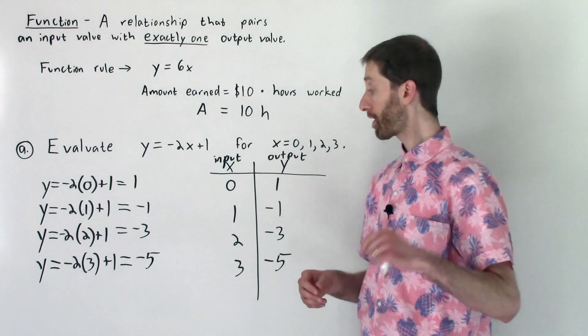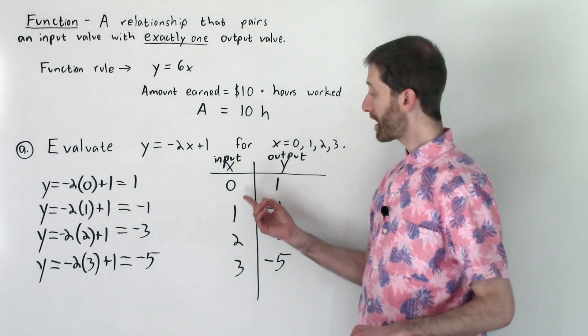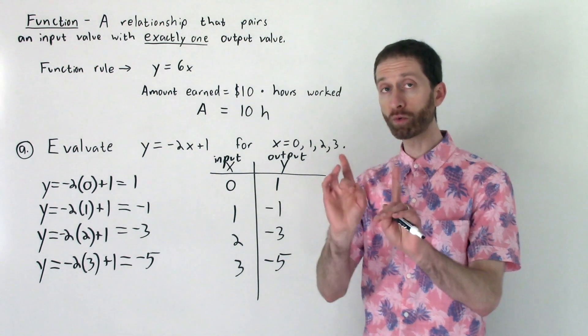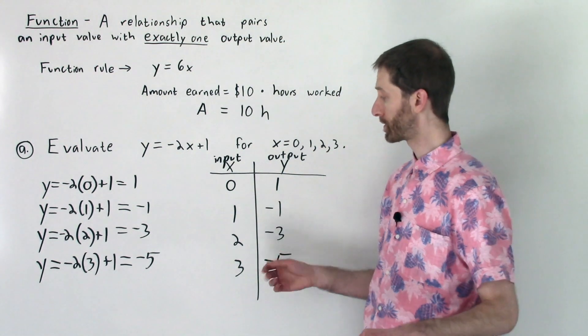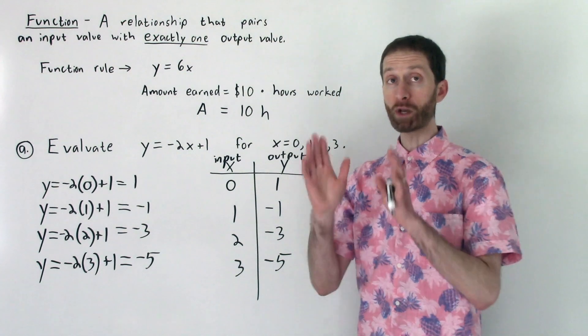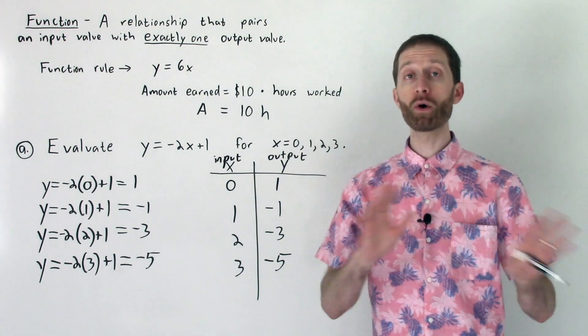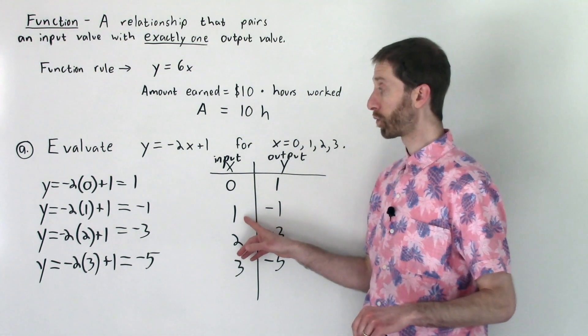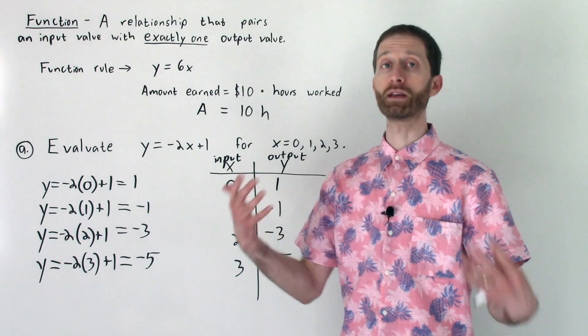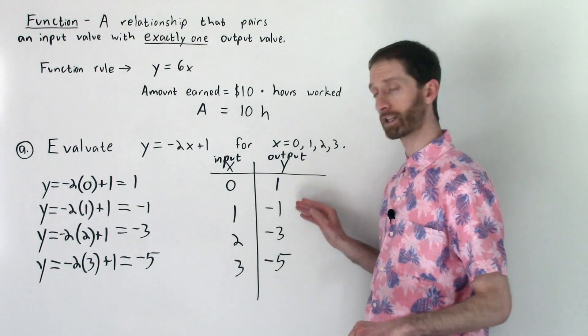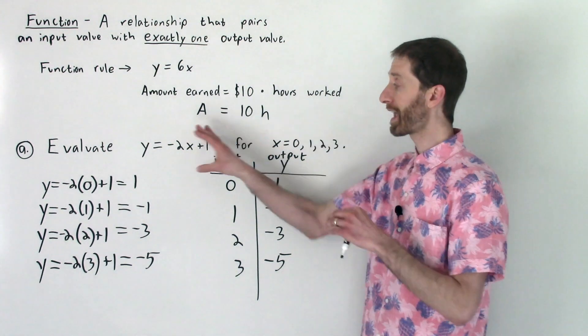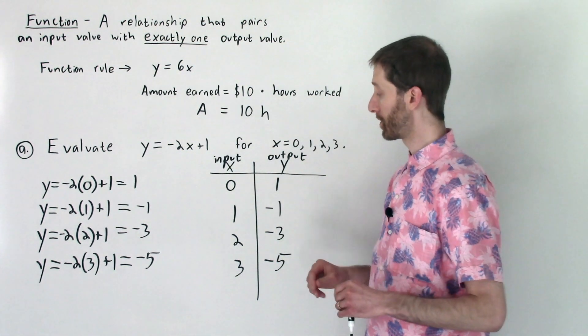Notice a couple of things here. First, notice that for every input value we have there was only one y value that went with it. For instance, when we plugged in 1, we only got out negative 1. No other number was a result of plugging in 1, and no other number will be a result of plugging in 1, except for this exactly one value. That makes this a function.